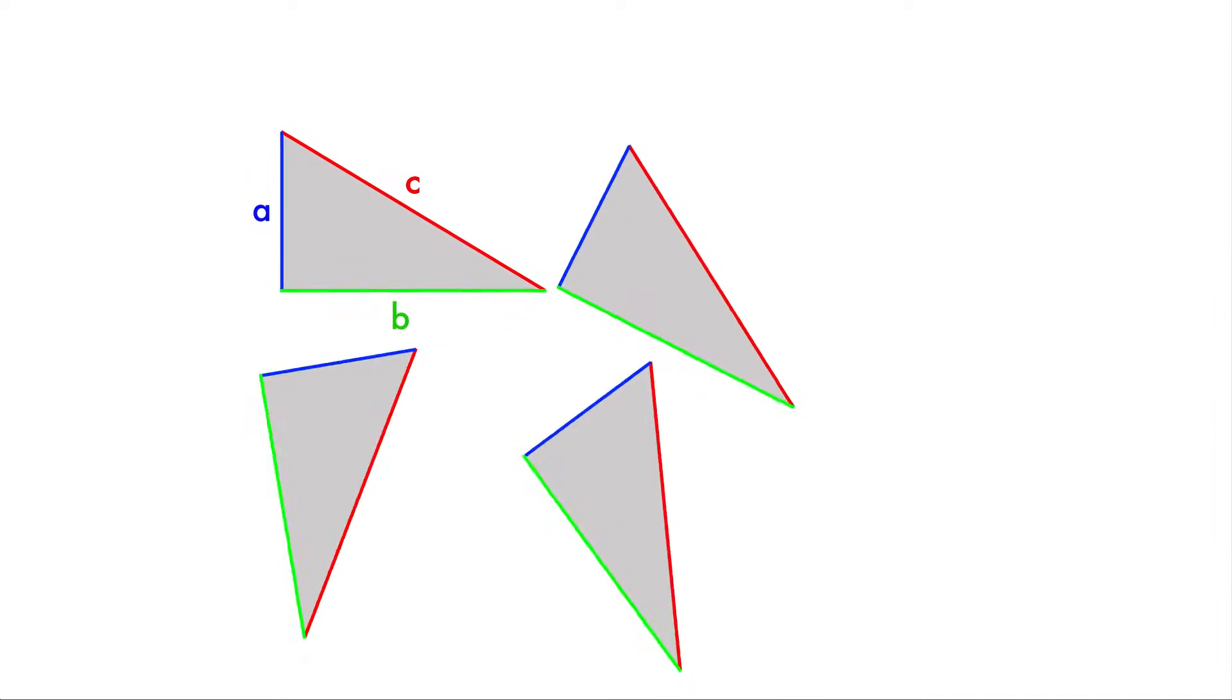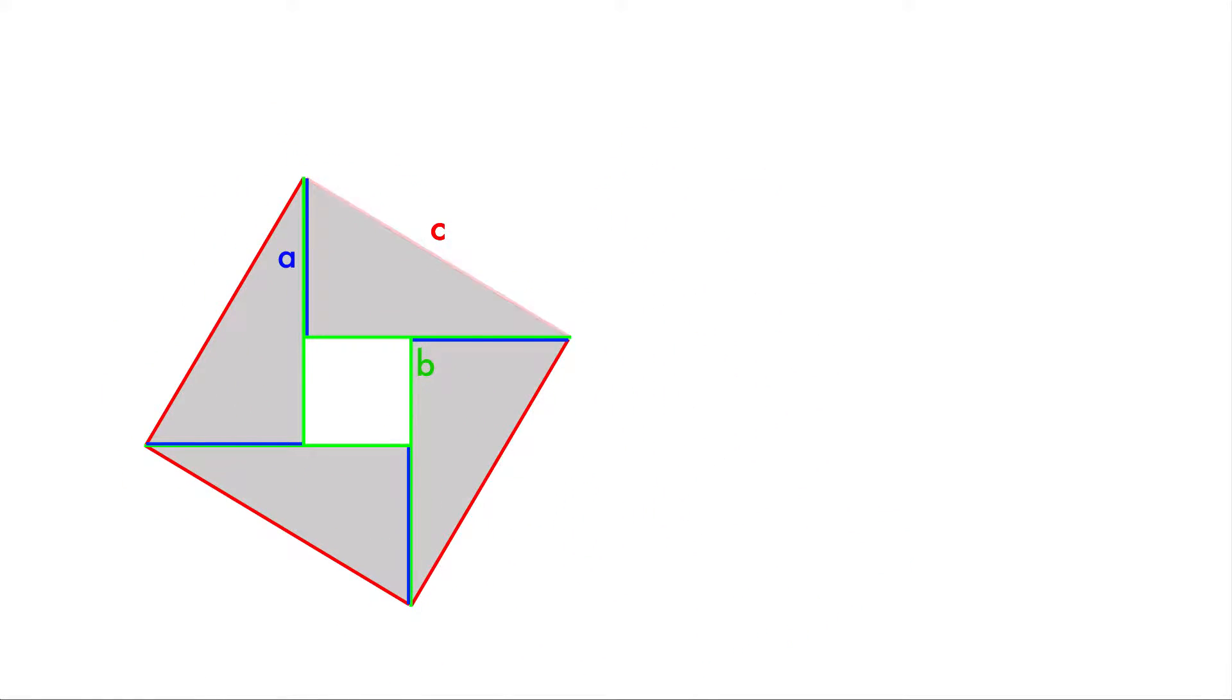And what we're going to do is we're going to arrange those into a square. As you can see, the hypotenuse of our triangles is going to form the outside of the square. So now we've got this big square on the outside, and you can see it kind of formed this little empty square on the inside, and that's fine.